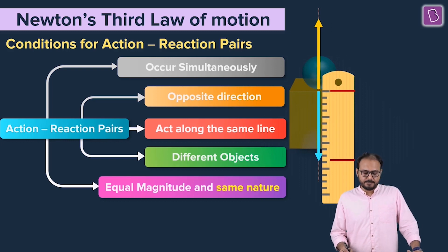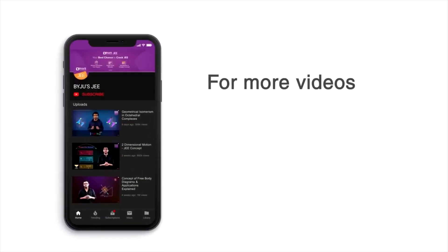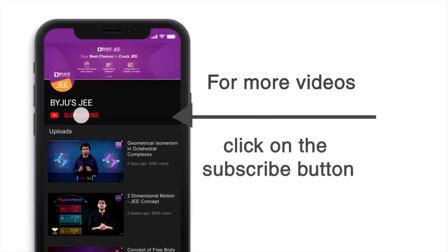Property number one, occurs simultaneously. Property number two, opposite direction. Property number three, act along the same line. Property number four, different objects. Property number five, equal magnitude, same nature. For more videos and live lectures on the JEE, click on the subscribe button now.